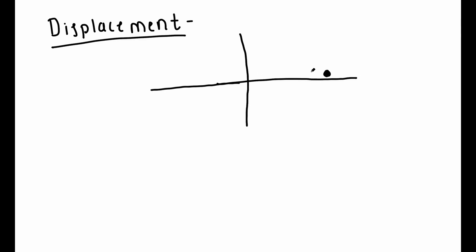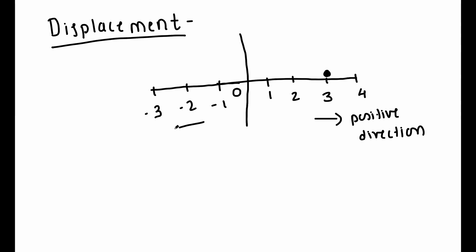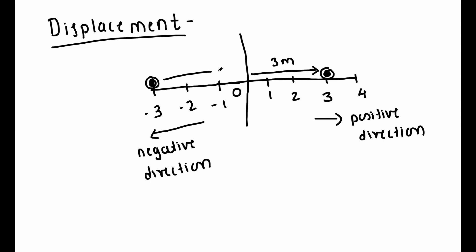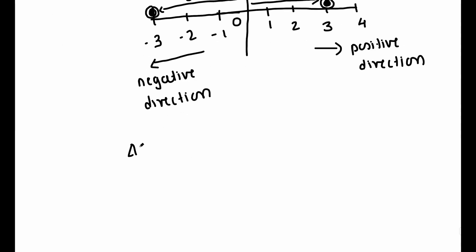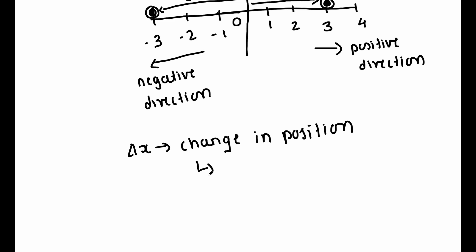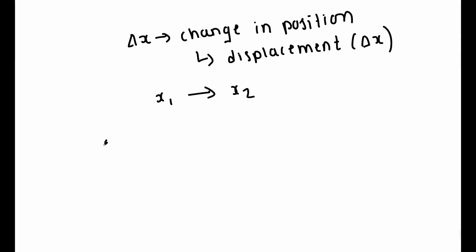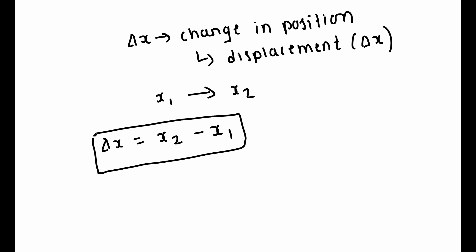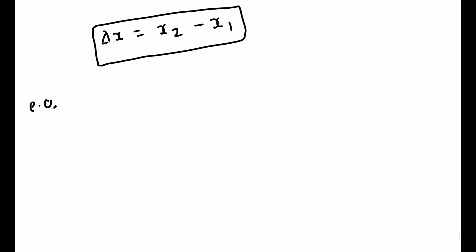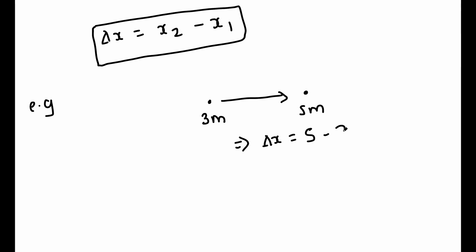When we talk about the position of an object, it is relative to some reference point called the origin. The positive direction of the axis is the direction of increasing numbers, while the opposite is the negative direction. So if a particle is at x = 3 meters, it is 3 meters in the positive direction. If the particle is at x = -3 meters, it is 3 meters in the negative direction from the origin. A change from position x1 to position x2 is called a displacement, given by delta x, where delta x = x2 - x1, which is the final position minus the initial position. For example, if a particle moves from 3 meters to 5 meters, then delta x = 5 - 3 = 2 meters.